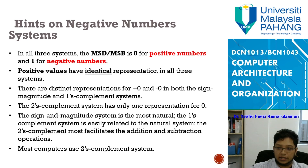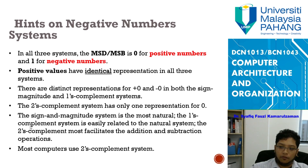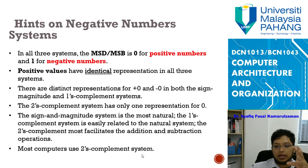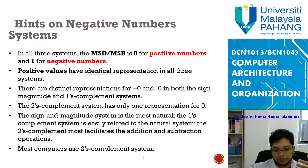Summarizing all three systems: in all three, the most significant bit on the left is zero for positive and one for negative numbers. Positive values have identical representation across all three systems. Both sign-magnitude and one's complement have distinct representations for plus zero and minus zero, while two's complement has only one representation of zero. Sign-magnitude is the most natural, one's complement is easily related, but two's complement is the most useful for addition and subtraction, so most computers today use it.